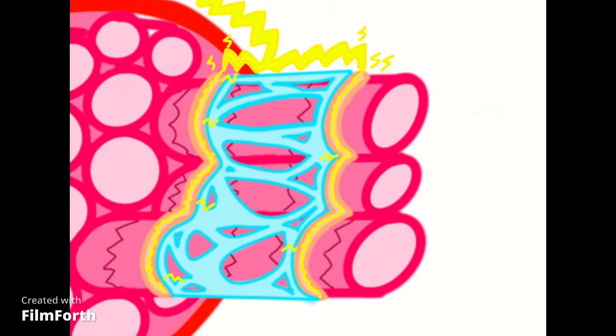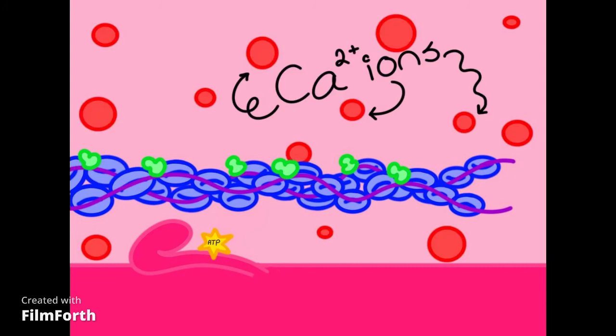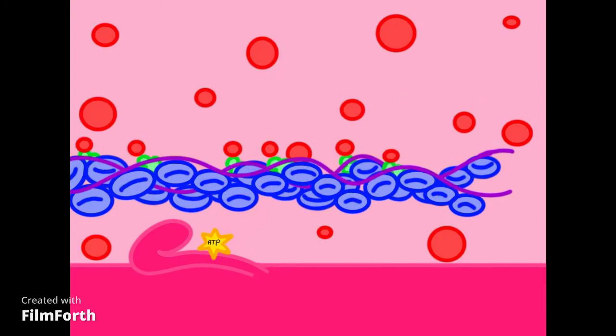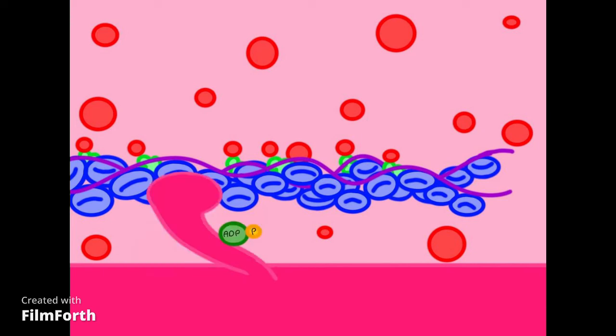The sarcoplasmic reticulum uses ion pumps to build up a high concentration of calcium ions, and when it receives the signal from the brain, it releases the calcium ions into the sarcomeres. These ions then bind to the green protein, troponin, causing it to change structure and pull the purple bodyguard protein, tropomyosin, out of the way so the myosin head can create a crossbridge and go about its business.